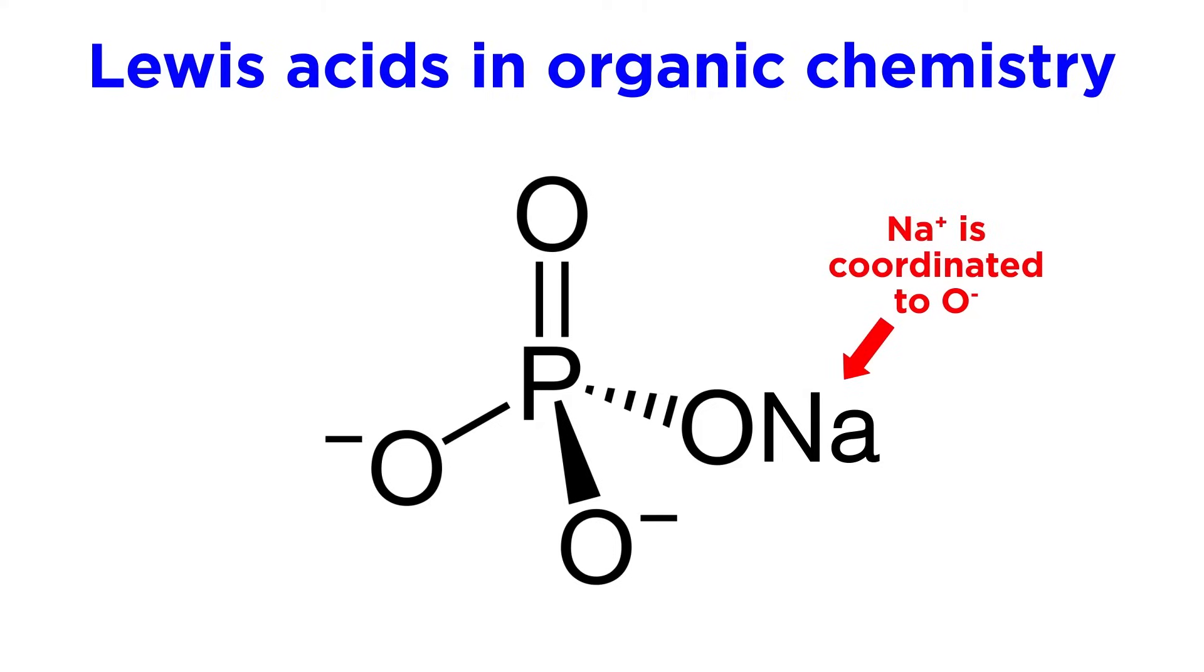This means that we can often find metal cations like this coordinated to regions with a formal negative charge on certain kinds of molecules, especially oxyanions, like here with this phosphate ion.